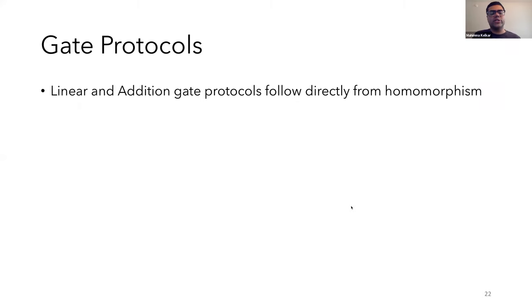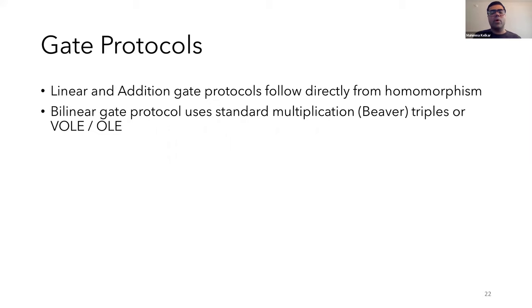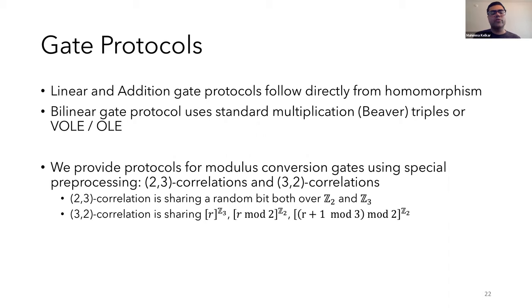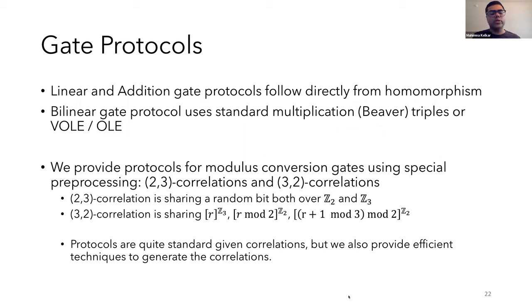So in terms of gate protocols, the linear and addition gates can be computed locally, and this directly follows from the linear homomorphism of additive secret sharing. Now for the bilinear gate, where both the matrix and the input are secret shared, either we can use standard multiplication triples or something like OLE or vector OLE correlations for unkeyed primitives or when the same key is used to evaluate multiple inputs. For our modulus conversion gates, we'll use a special type of preprocessing. To convert from Z2 to Z3, we'll use a 2-3 correlation, which is a random bit that's shared both over Z2 and Z3. And for the conversion from Z3 to Z2, we'll use preprocessing of the following form: a random R, which is shared over Z3, R mod 2, which is shared over Z2, and R plus 1 mod 3 mod 2, which is also shared over Z2. And given these correlations, the protocols for evaluating the gates turns out to be quite straightforward.